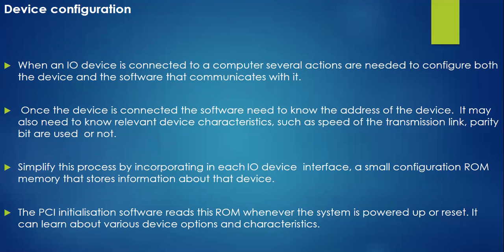To simplify device configuration, each IO device interface incorporates a small configuration ROM that stores information about that device. By reading this ROM, the complete information about the device is available to the system — similar to a notebook with your name, class, and department written on it. The PCI initialization software reads this ROM whenever the system is powered up or reset, to learn about various device options and characteristics.